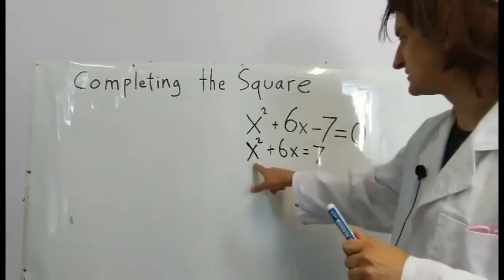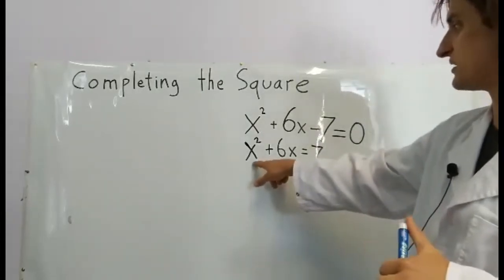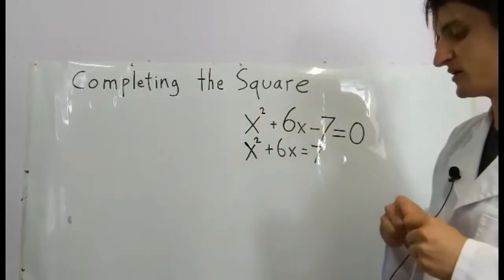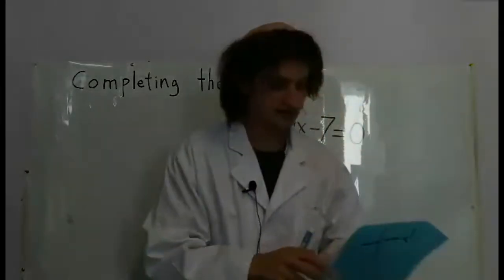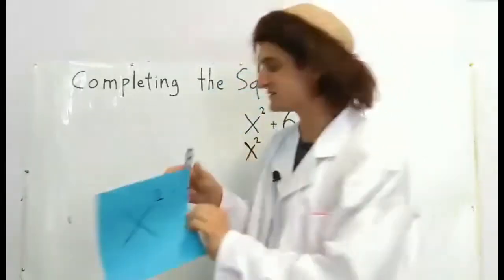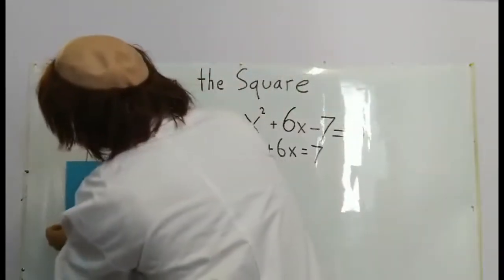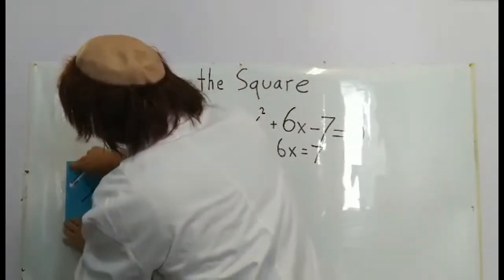Once we have this, we can ask ourselves, what does x² look like? It's a square whose sides are x, just like this. So we'll paste it right here.